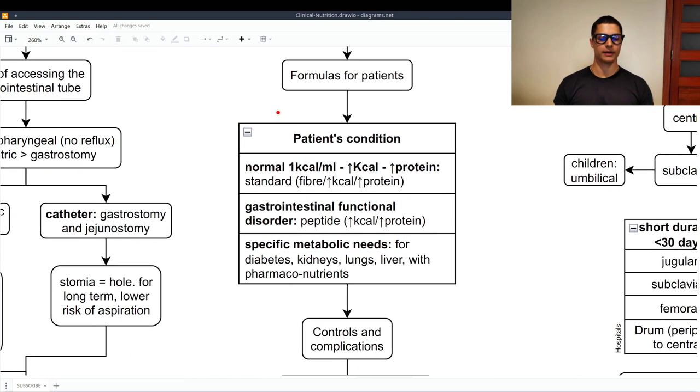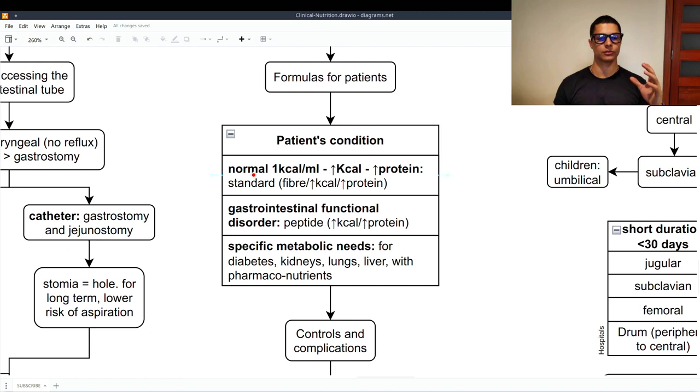So, the formulas that are present are based on the patient's condition. If the patient condition is normal, then we recommend a standard formula, which can be with or without fiber. If they are normal, but with a requirement of more calories, then there is a standard high calorie. With more protein, well, there is a standard high protein. If the patient has a gastrointestinal functional disorder, then we use the peptide formula. And again, if they require more calories, there is the peptide high calorie. And if they require more protein, there is the peptide high protein. And then there are also formulas for specific metabolic needs, for diabetes, for kidneys, diseases, lungs, liver, and also formulas with pharmaconutrients.